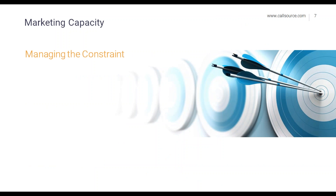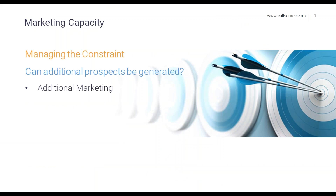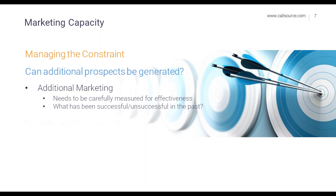How are you able to manage that marketing capacity constraint? Can additional prospects be generated? Absolutely. The first thing that can be done is additional marketing, which would need to be carefully measured for effectiveness — you don't want to throw money at the problem, and marketing is an expensive proposition. Additional marketing can include more frequent mailers, new mediums, or even an improved online presence. You'd also want to look into what has been successful or unsuccessful in the past — you don't want to make the same mistake unnecessarily. Our reporting can provide insight into what has worked and what hasn't.